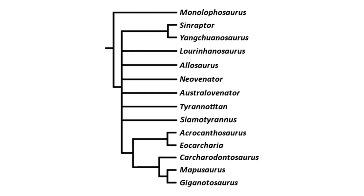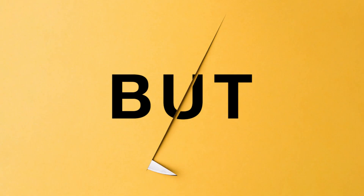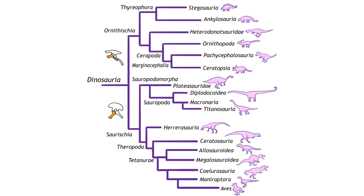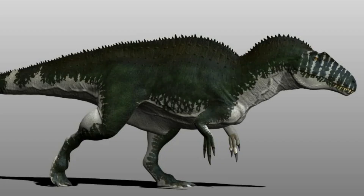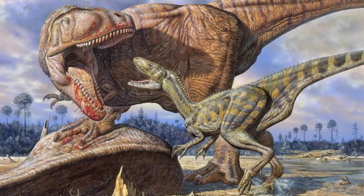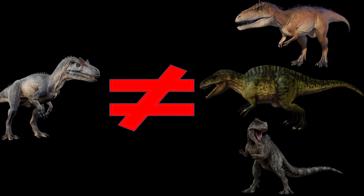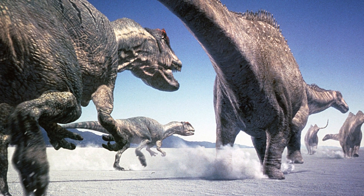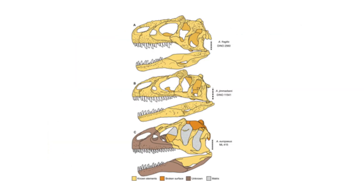The exact evolutionary origins of the Allosaurus are still being studied and debated by paleontologists today, but it is generally believed that it is a descendant of earlier theropods that lived during the middle Jurassic period. It was part of the same diverse group of theropods which included Acrocanthosaurus, Giganotosaurus, and Carcharodontosaurus, just to name a few. However, these dinosaurs are more in a secluded part of this family and not directly related. Allosaurus itself went through several stages of evolution, with different species exhibiting various sizes, skull structures, and other features.